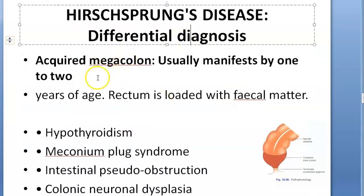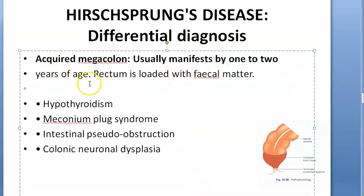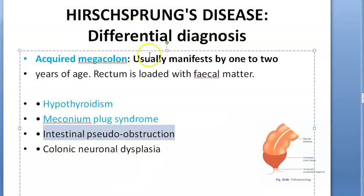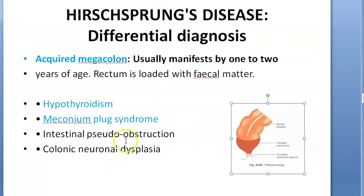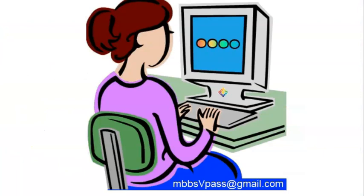Hirschsprung's disease is most commonly associated with Down syndrome, as shared genetic links seem to connect them. Differential diagnoses include acquired megacolon, hypothyroidism (low metabolism causing constipation), meconium plug syndrome, colonic pseudo-obstruction, and colonic neuronal dysplasia — essentially any condition causing obstruction or reduced fecal motility.